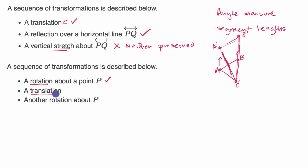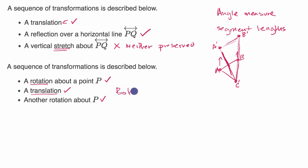Then we have a translation, which is also a rigid transformation, and so that would preserve both again. Then we have another rotation about point P — once again a rigid transformation. So in this situation, everything is going to be preserved: both angle measure and segment length are going to be preserved in this example.